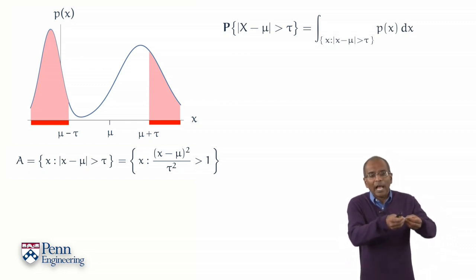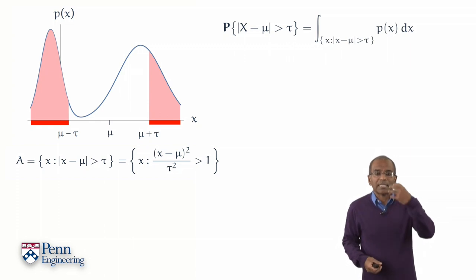It's going to be the area under the curve indicated in the figure. And formally, algebraically, in calculus, we will write this as an integral over the set A of the density function p of x dx. This is the area under the curve of p of x over the set A.